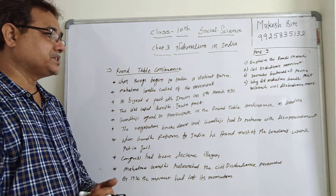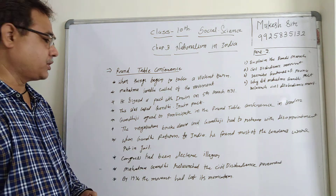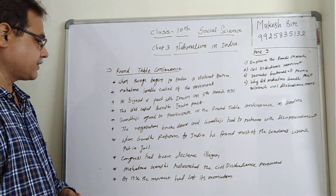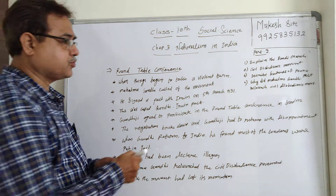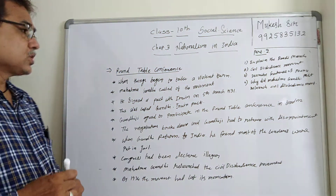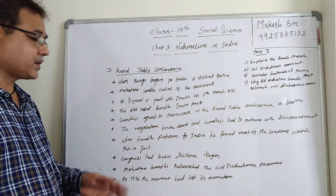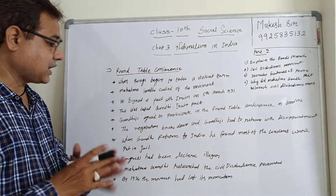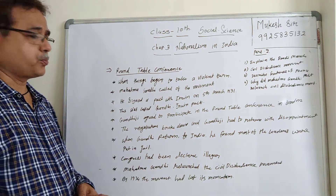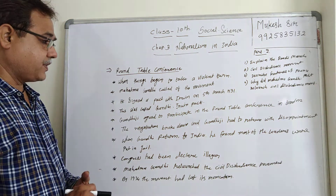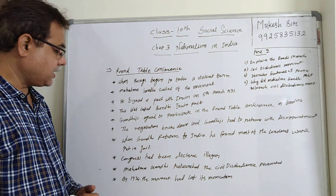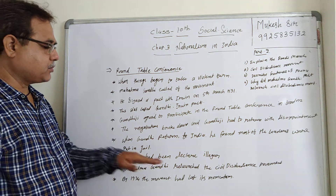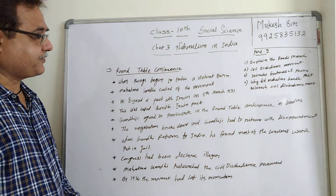The negotiations broke down and Gandhi ji had to return to India disappointed. When Gandhi returned, he found most leaders were put in jail. Congress had been declared illegal. Mahatma Gandhi relaunched the Civil Disobedience Movement for his leaders. By 1934, the movement had lost its momentum — its effect had reduced significantly.